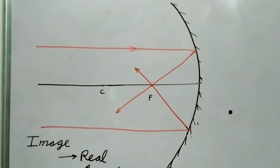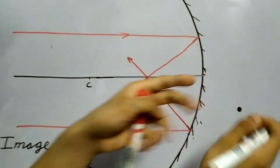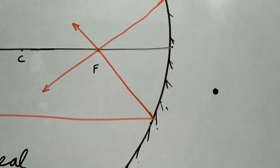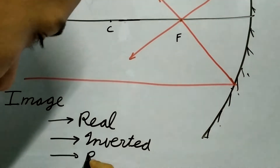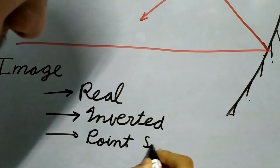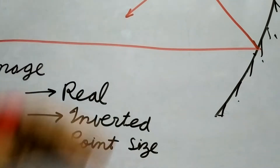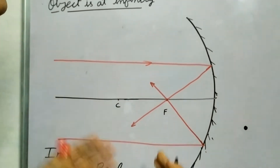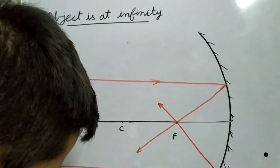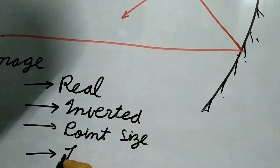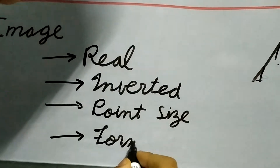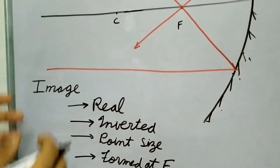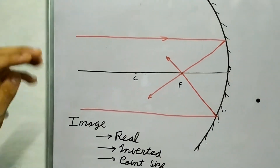What is the size of this image? It's a very, very small disc, so you can approximate it as a point. We call this a point-sized image. And where is it formed? It is clearly formed at the focus. This is what happens when the object is at infinity.